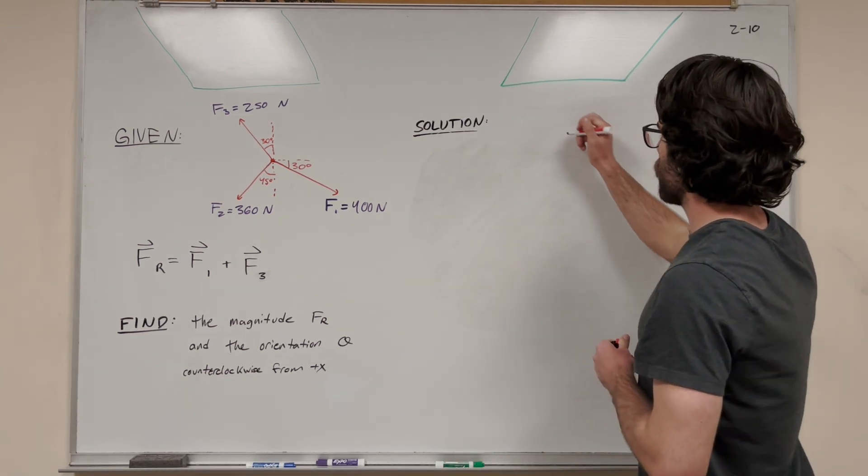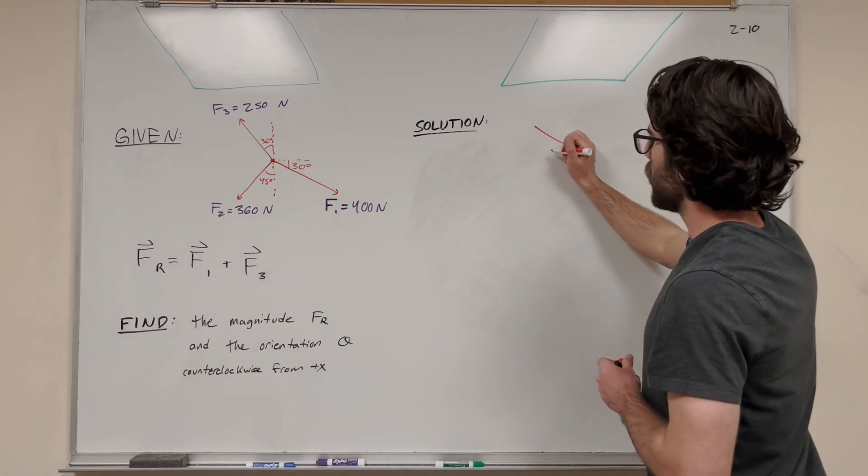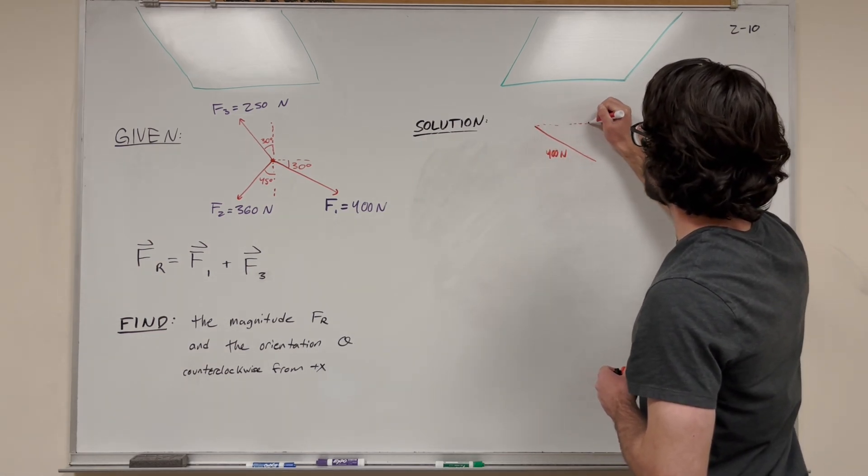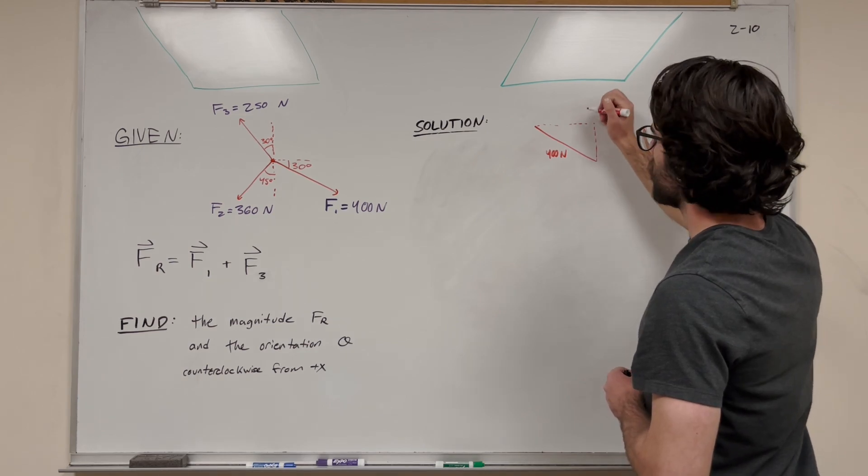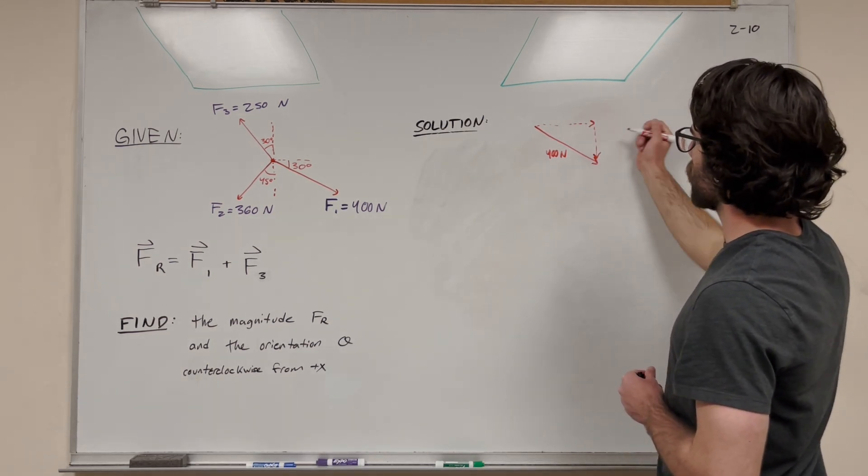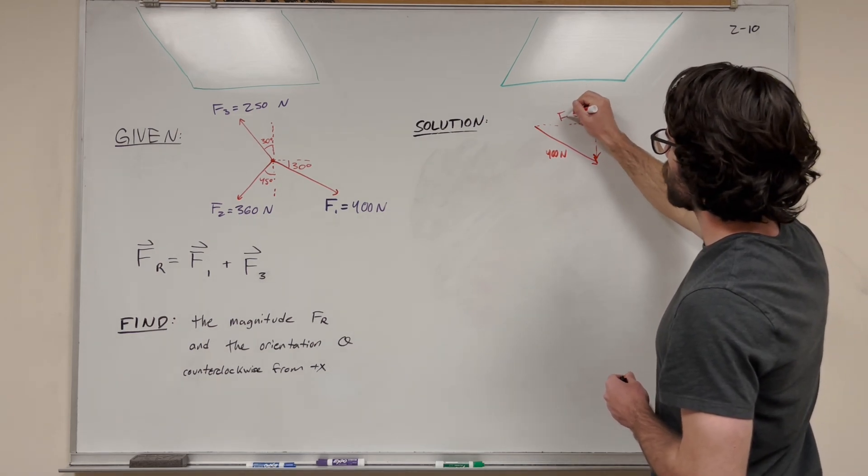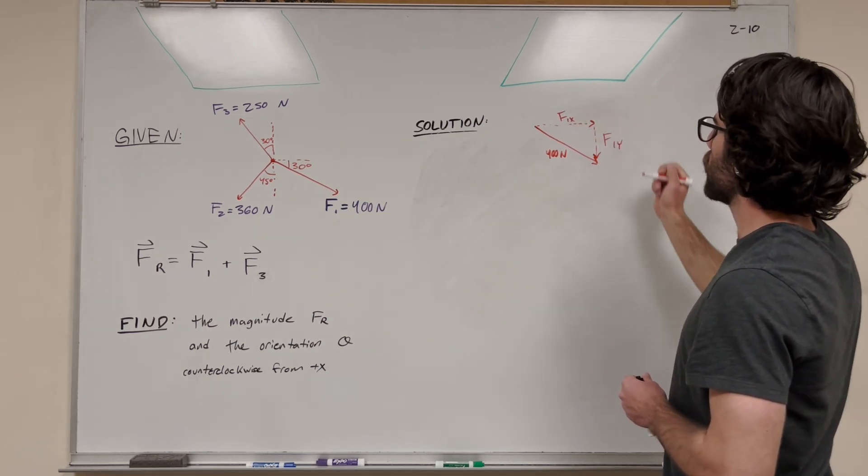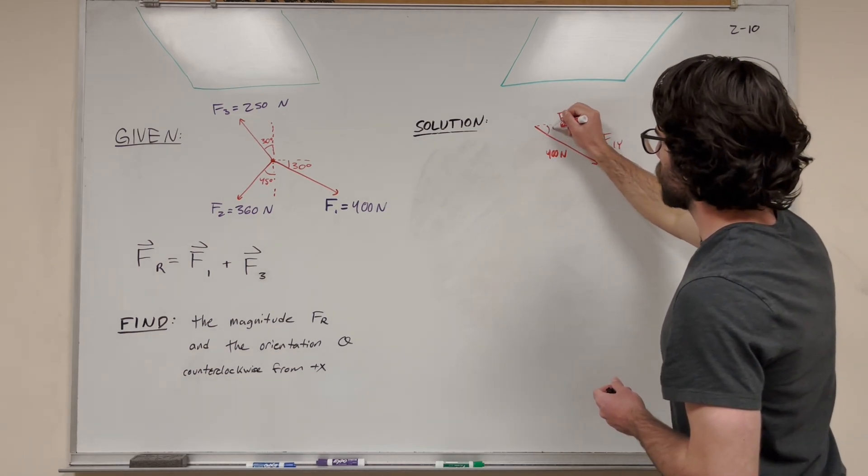I'm going to start by drawing force 1. Its hypotenuse is 400 newtons, but it also has these two other vectors on it. It's going to have a vector that goes like this and a vector that goes like this. This is F1x and this is F1y. We know that this is 30 degrees.